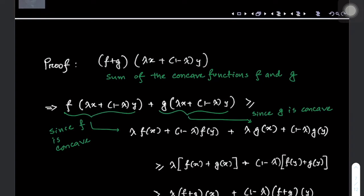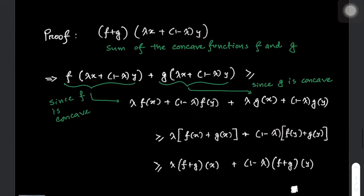We can then rewrite this expression by collecting the lambda and (1 minus lambda) terms, giving us lambda times (f(x) plus g(x)) plus (1 minus lambda) times (f(y) plus g(y)). We can see that f(x) plus g(x) is the sum of f and g evaluated at x, and f(y) plus g(y) is the sum of f and g evaluated at y. So this can be written as lambda times (f plus g)(x) plus (1 minus lambda) times (f plus g)(y).